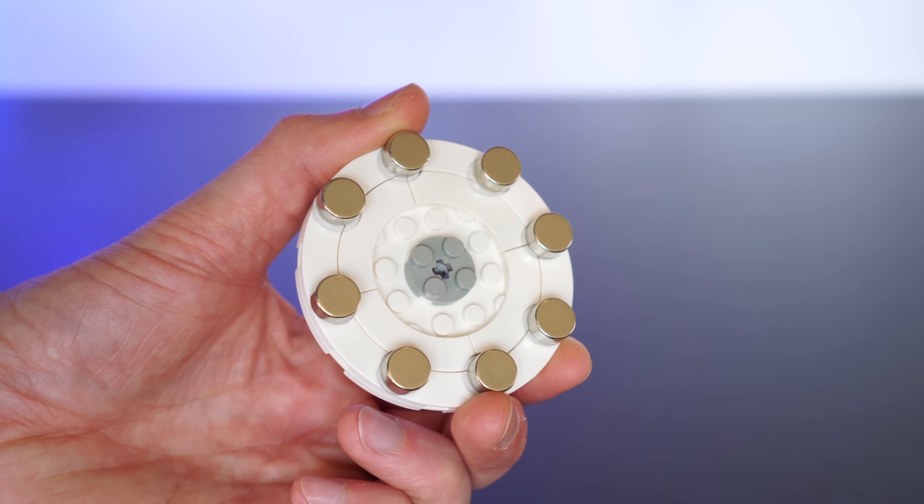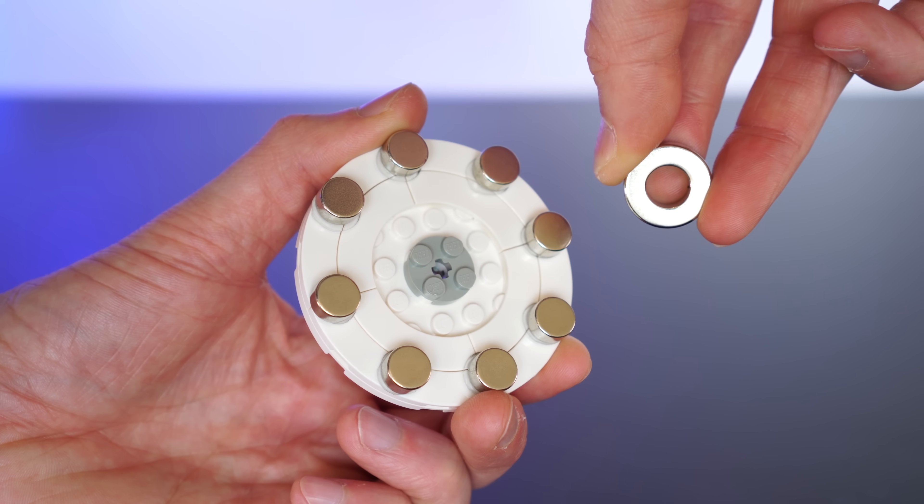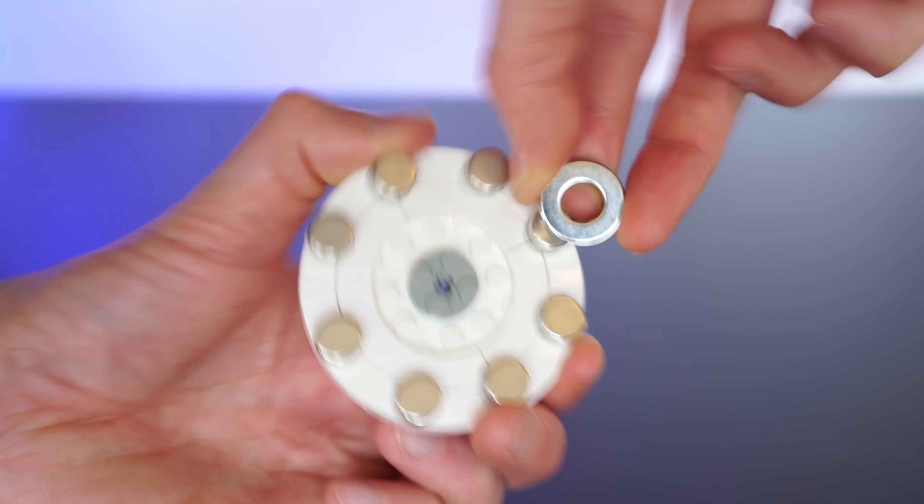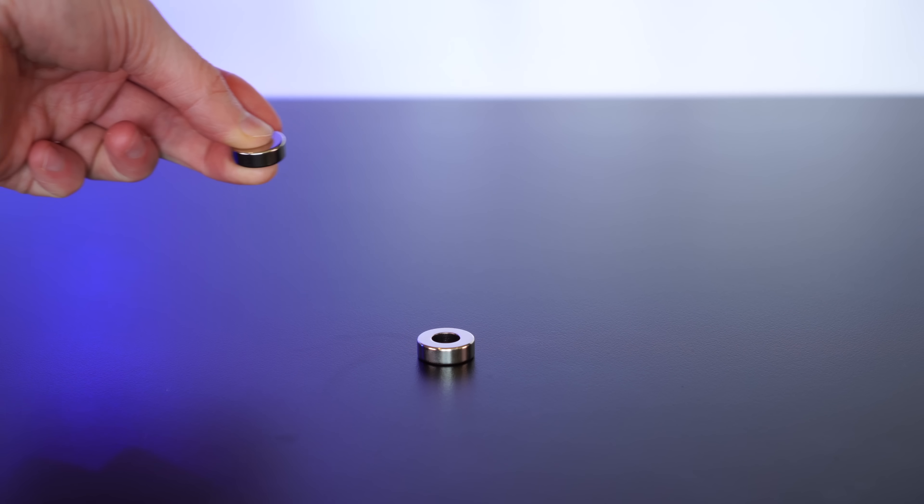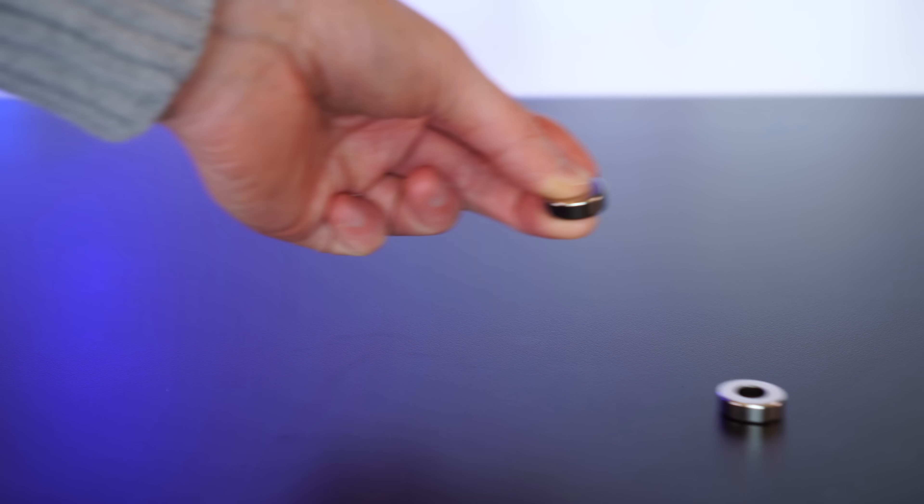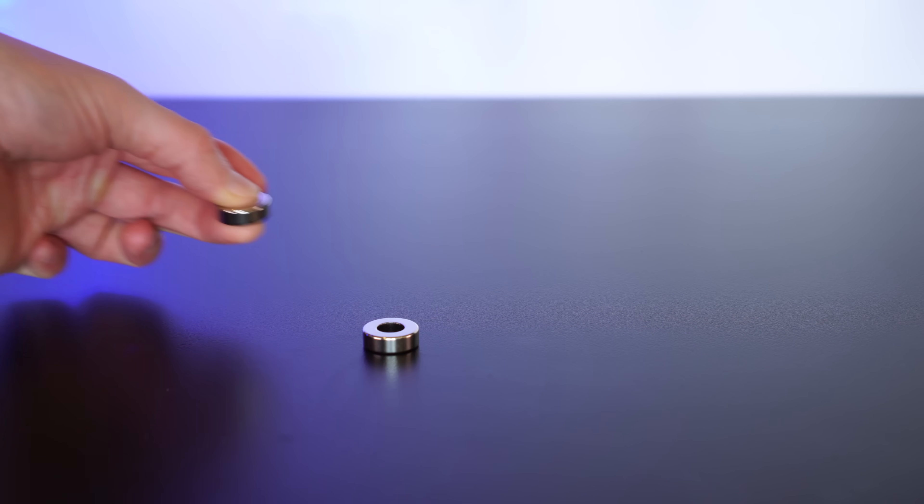So, this rotor is cool and all, but I have a feeling we're going to need bigger magnets if we really want a reasonable output. And these ring magnets could be exactly what we need. These are much stronger, and the hole makes it easier to mount onto LEGO. Ow! We still need to be careful around them when they're not bolted down to something.